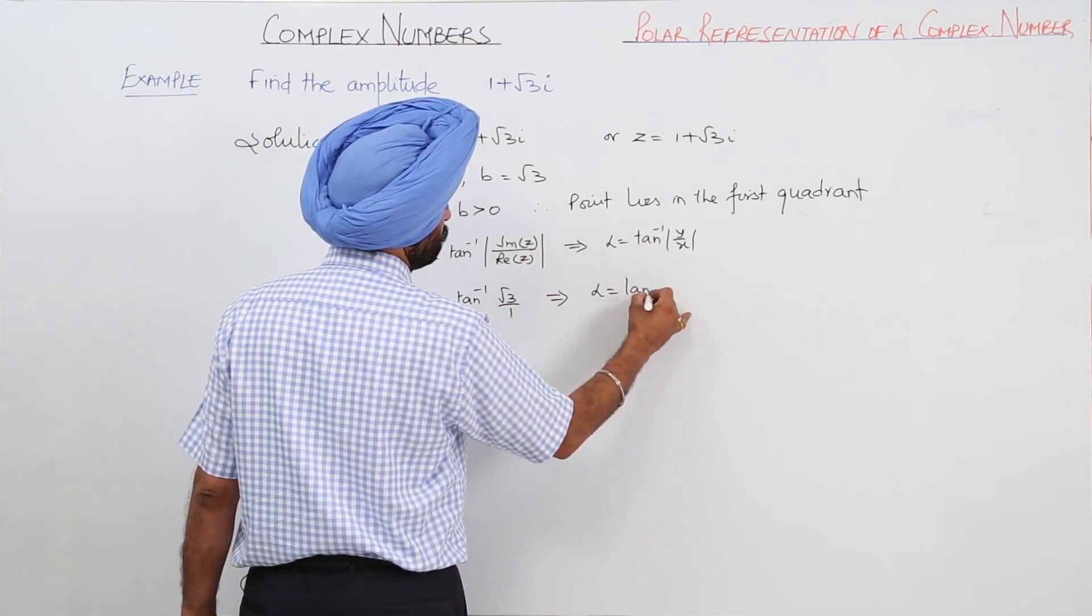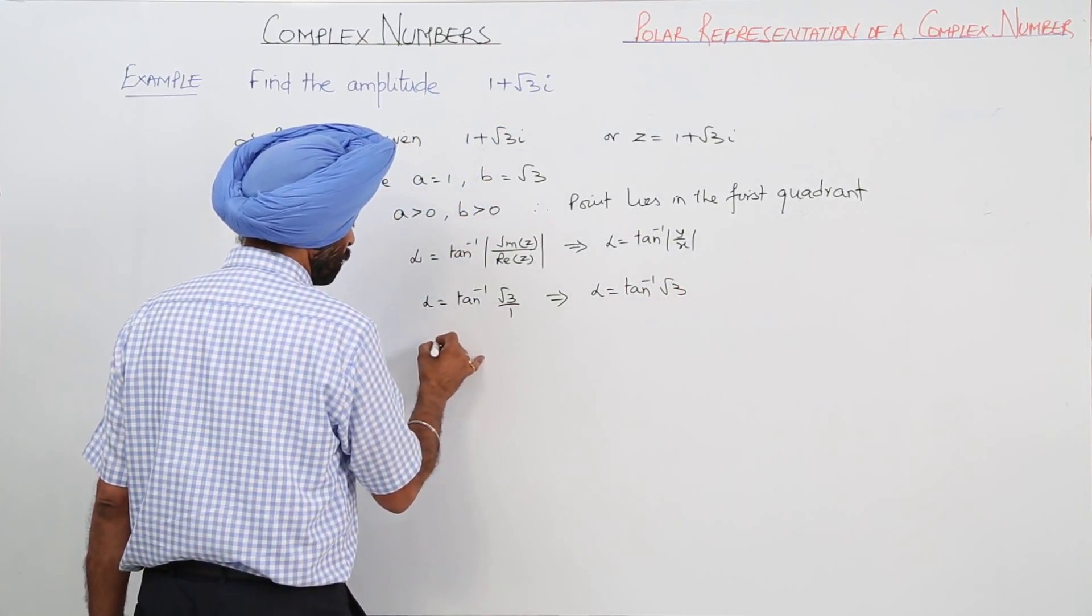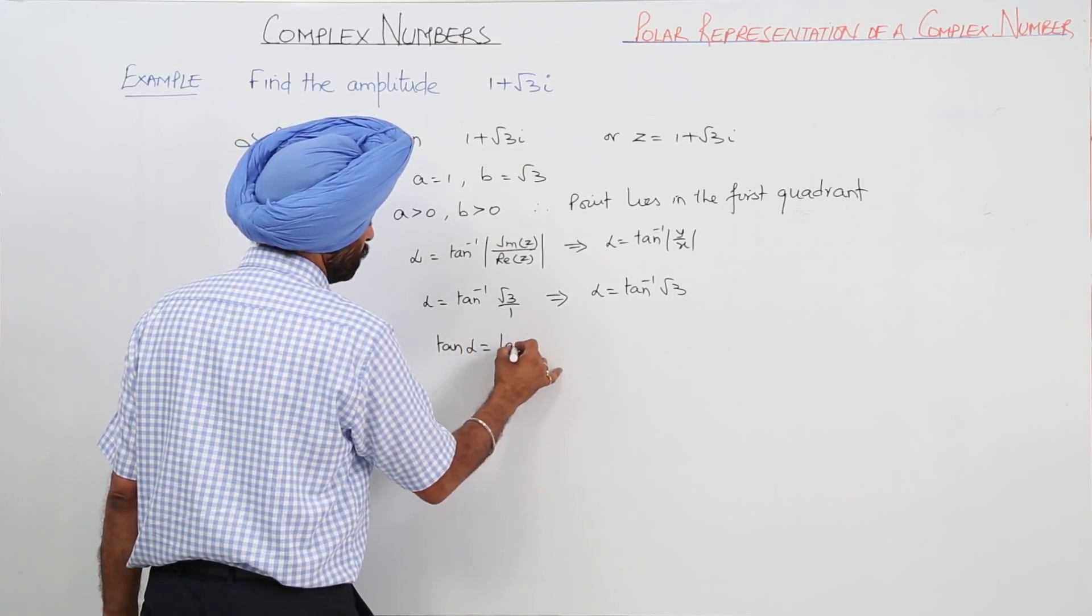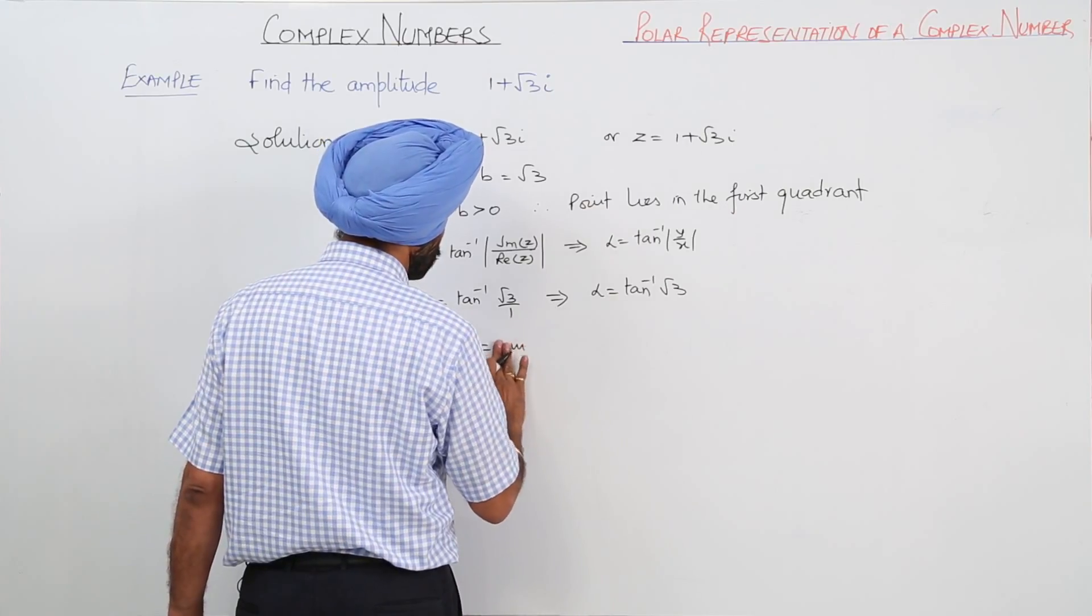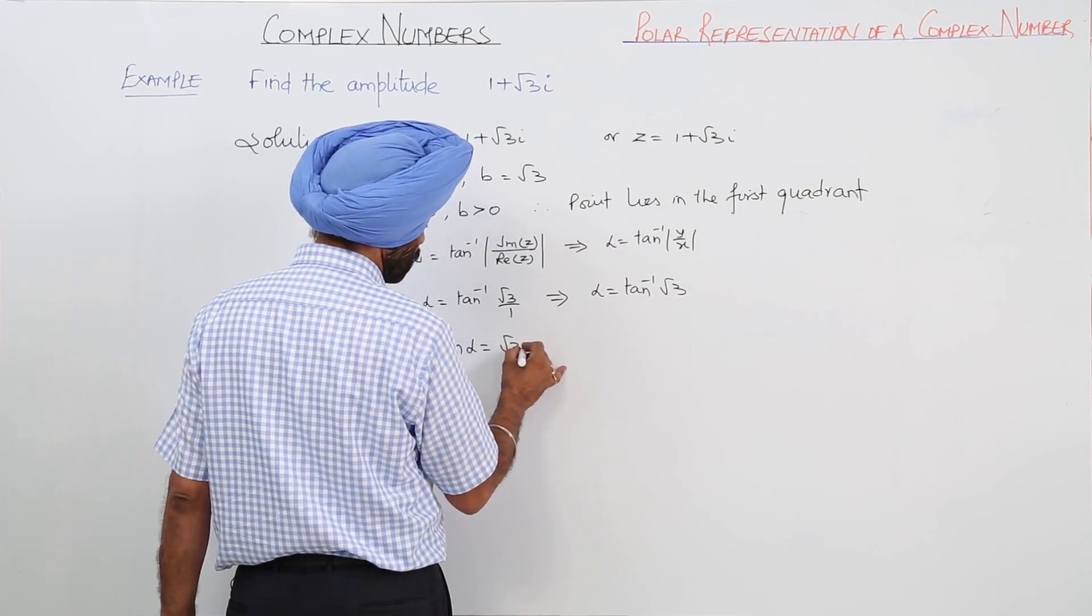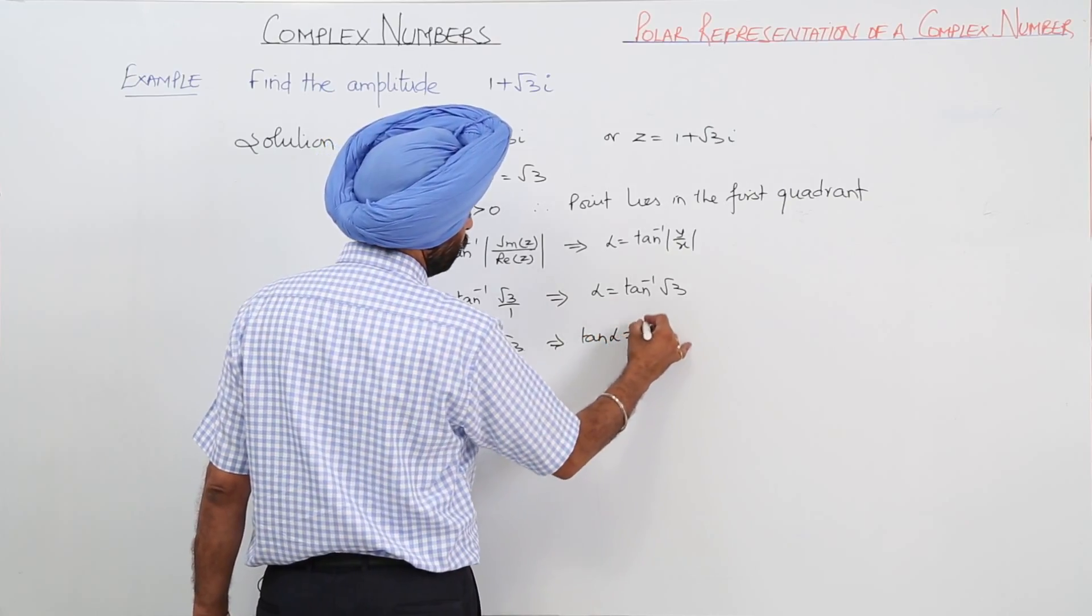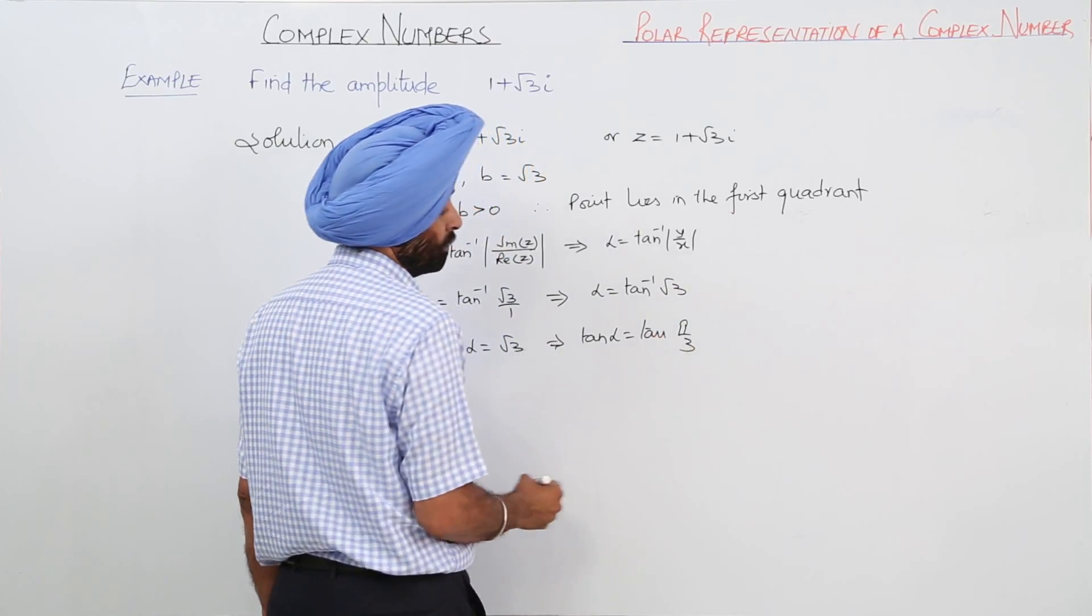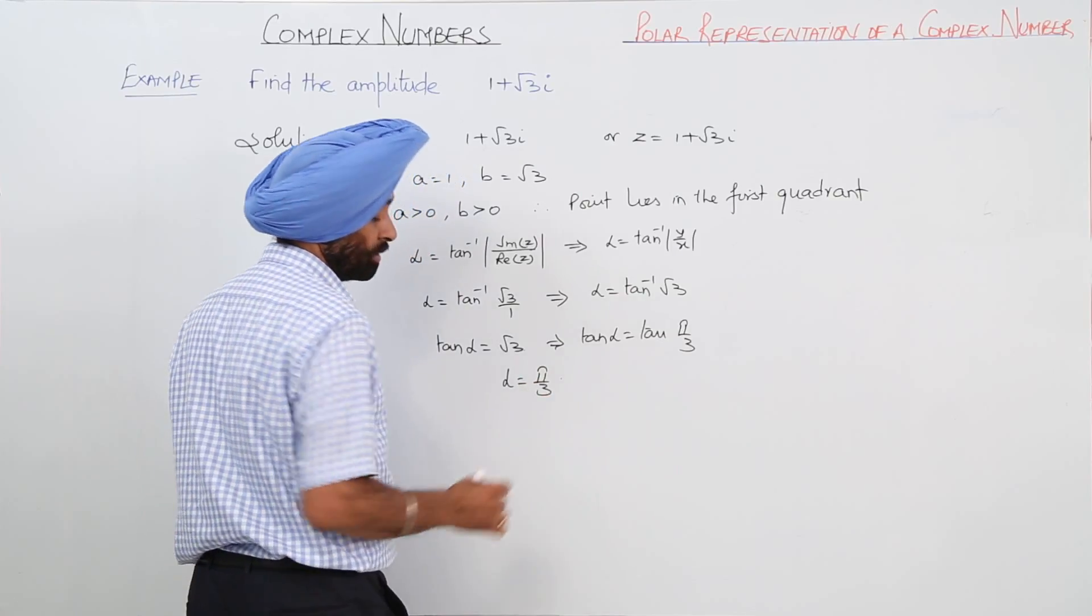So alpha equals tan inverse root 3, or tan alpha equals root 3. This implies tan alpha equals tan pi by 3, so alpha equals pi by 3.